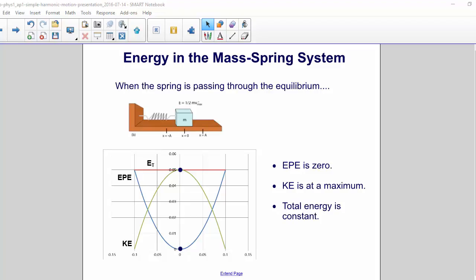When the spring is passing through the equilibrium point, elastic potential energy is zero, kinetic energy is at a maximum, and the total energy is constant. Here, the mass has all kinetic energy.